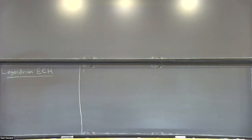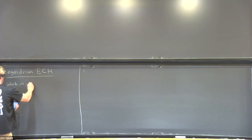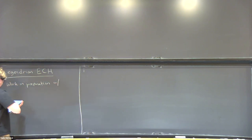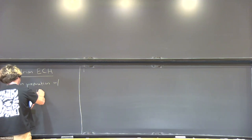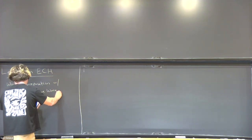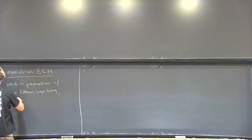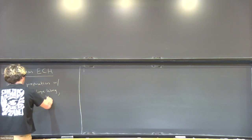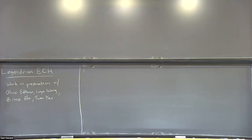So today I'm going to talk about some work in preparation with a bunch of people—basically Michael Hutchings students. This is a complete list of current students here: Oliver, Edmar, Lou Wang, Zyuan Zhao, Yuan Yao, and me. The project is to develop a version of embedded contact homology that counts holomorphic curves of the Legendrian boundary.